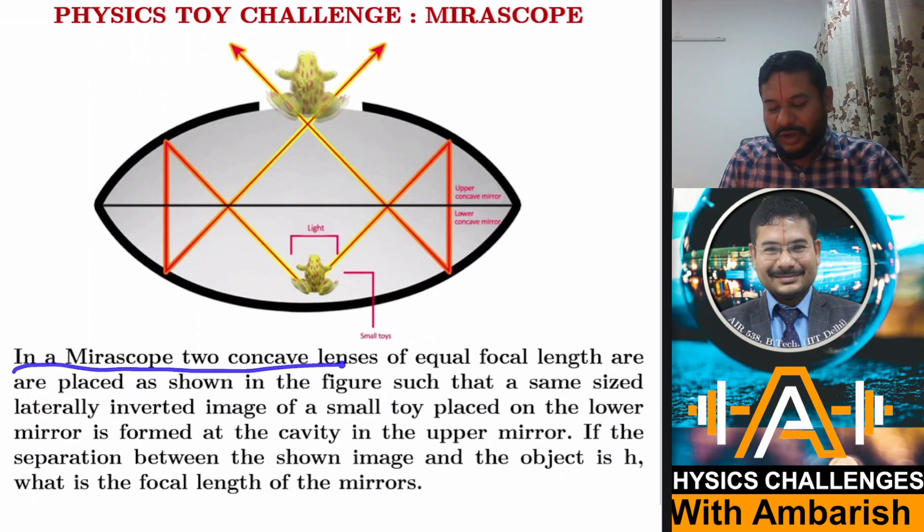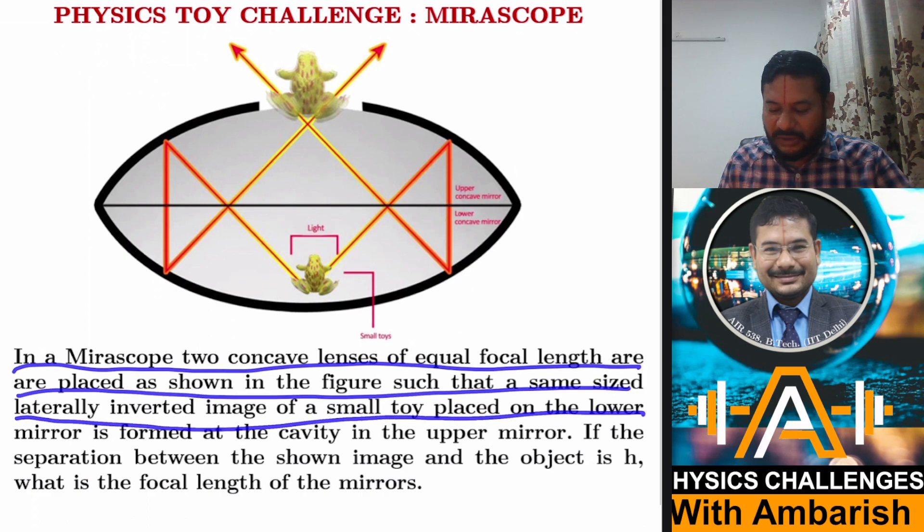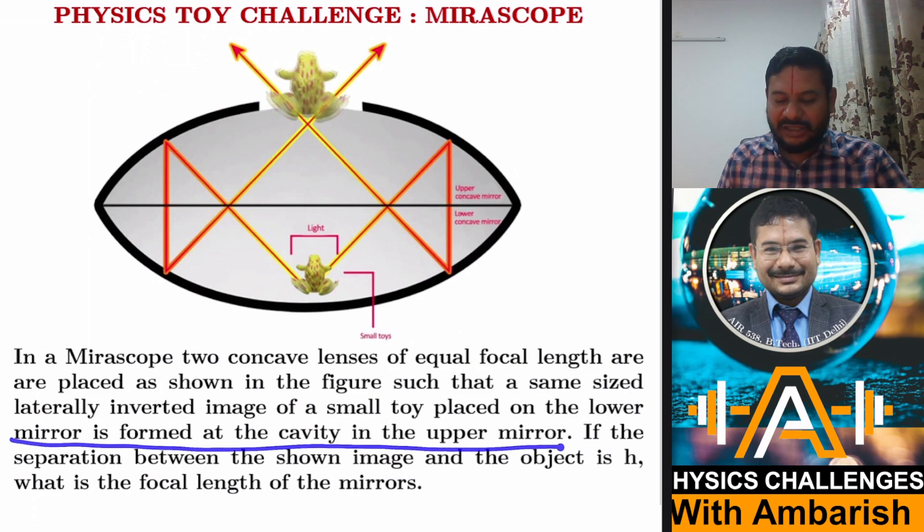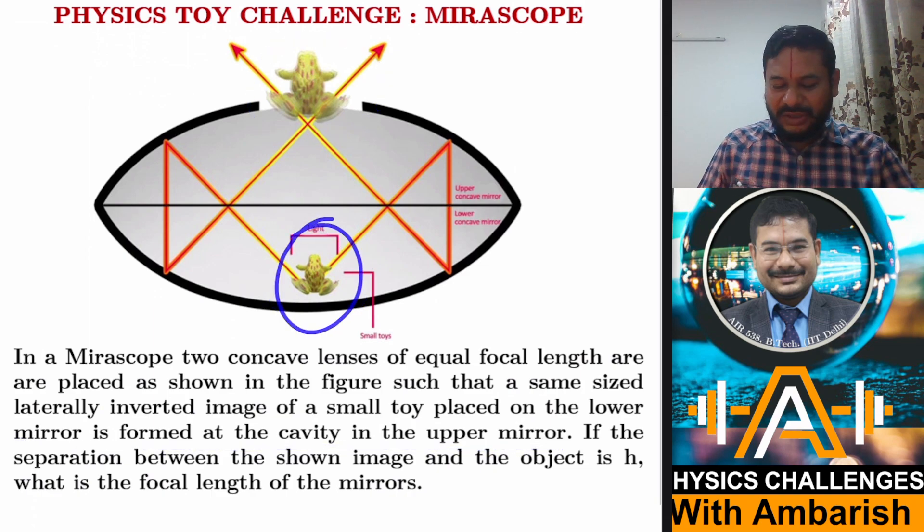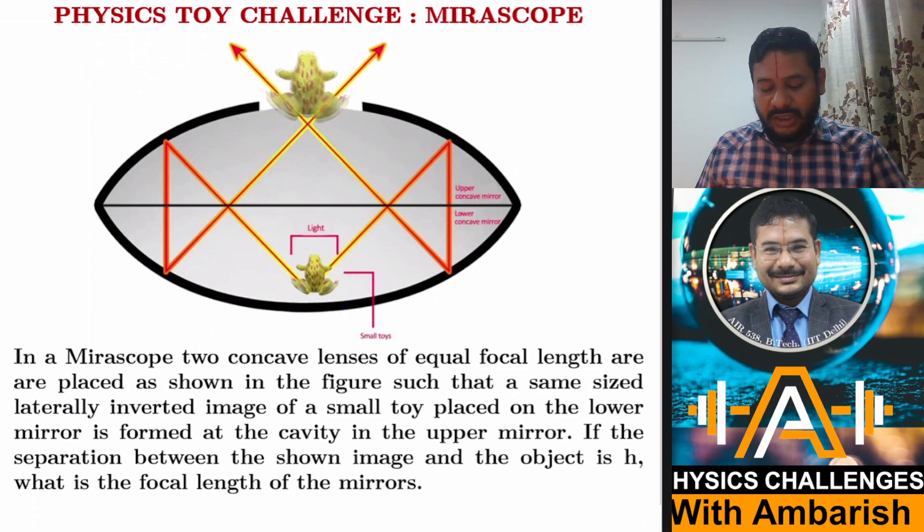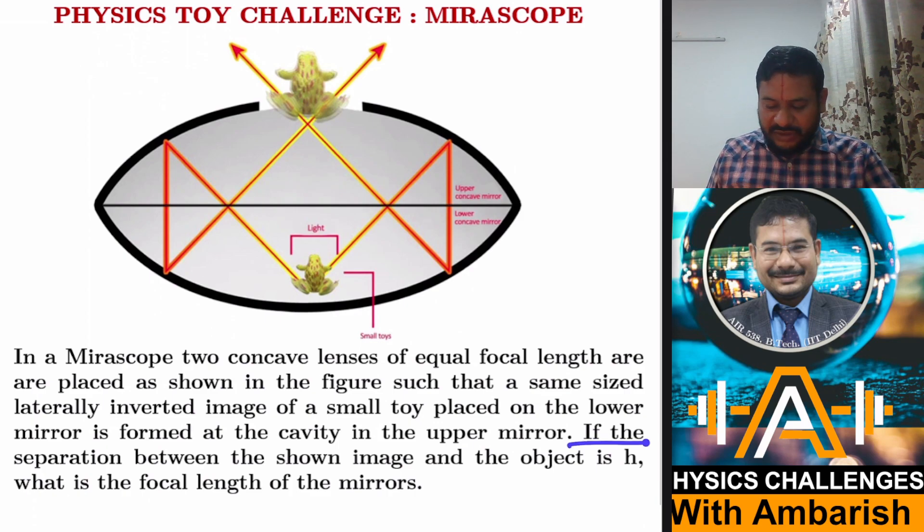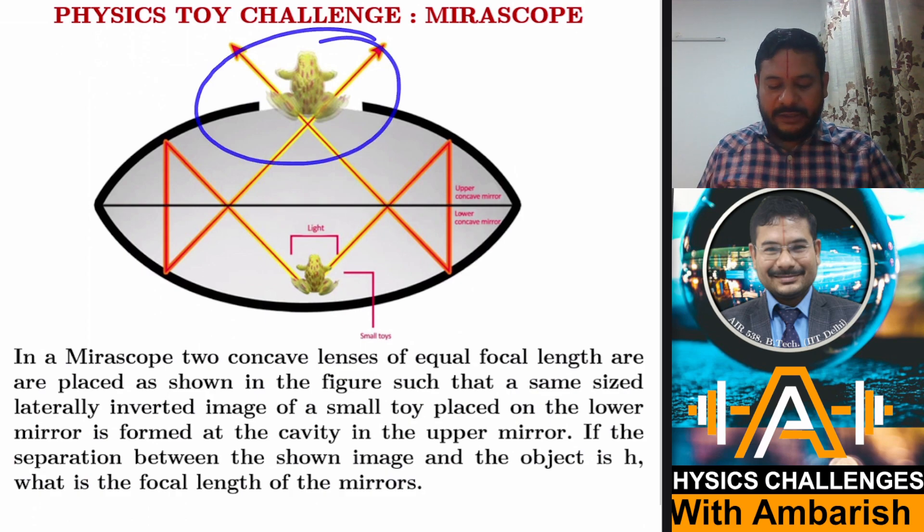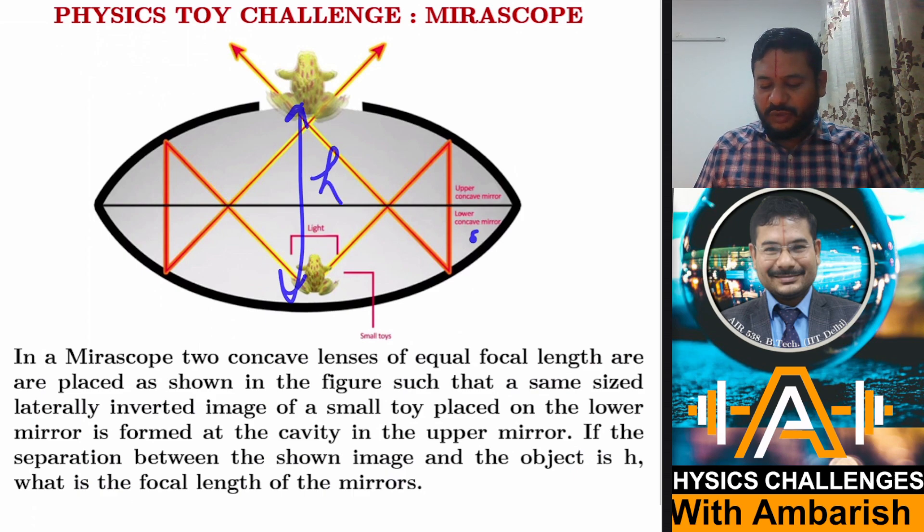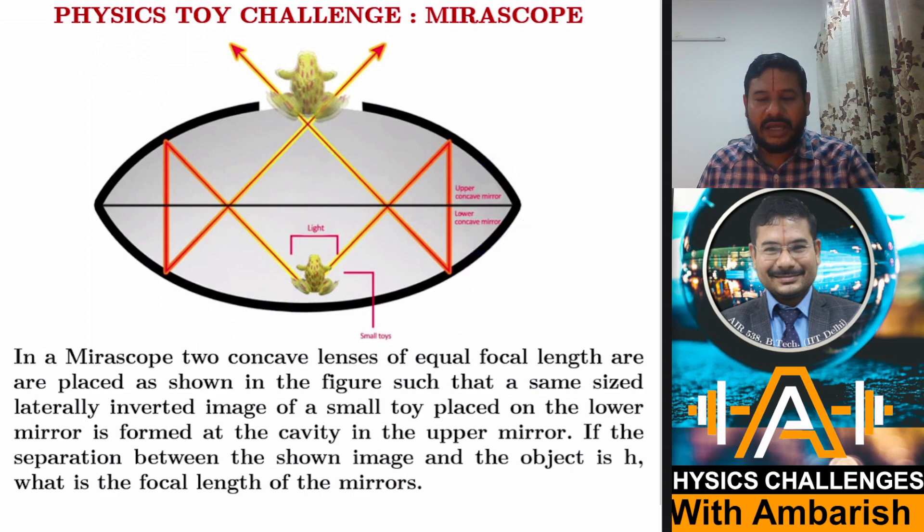So here's the challenge. In a Mirascope, two concave lenses of equal focal length are placed as shown in the figure such that same size laterally inverted image of a small toy placed on the lower mirror is formed at the cavity in the upper mirror. So I have placed a toy over here and here I'm getting the same sized image. The figure is not proper here, you're seeing it's kind of magnified, but you get the same size image in the cavity. In the upper mirror, if the separation between the shown image and the object is H, what is the focal length of the mirror?